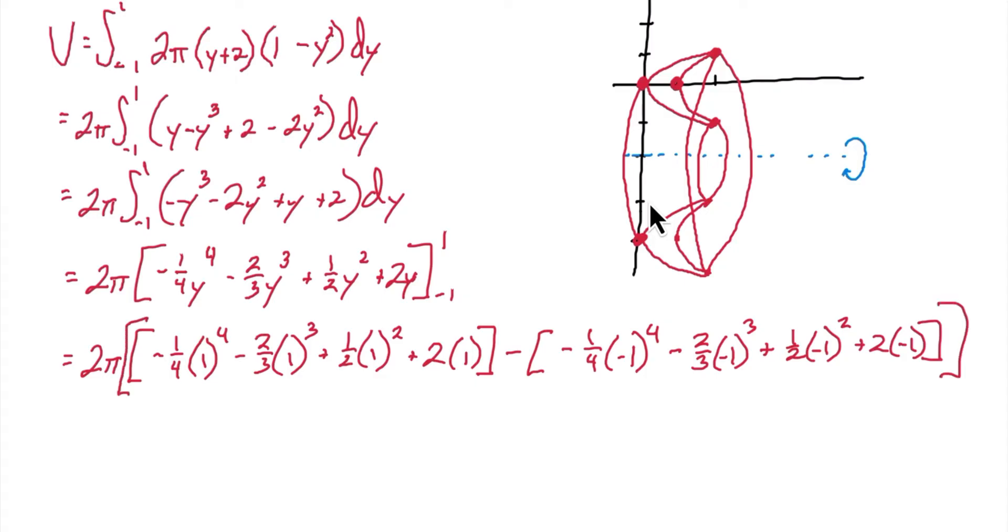And all of that, of course, is still times 2 pi. Simplifying this, we have 2 pi times 19 over 12 minus negative 13 over 12. Simplifying again, we get 16 pi over 3, which is the volume of that solid.